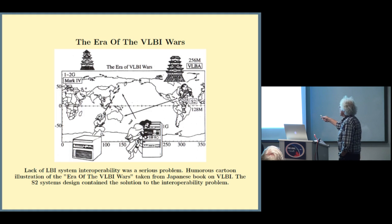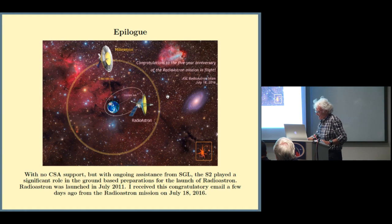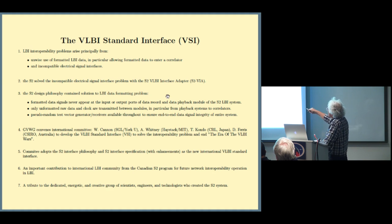This is the era of the VLBI wars. This is actually taken from a Japanese book on VLBI. The problem of interoperability produced all this difficulty. They call it the era of the VLBI wars. The S2, we won the war. This is a Canadian S2 guy with a big hammer. This is the K3 and K4 Japanese system. The VLBA and the Mark IV are these Haystack MIT systems. They're depicted as big fortified temples. The VLBI standard interface. In the end, they adopted the S2 philosophy and interface specifications for a new interface standard. The GBWG finally recognized that we had done the thing right. So they convened this committee: myself, Alan Whitney from Haystack, Tetsuro Kondo from CRL, and Dick Ferris from CSIRO to develop a new interface. This went on for about six months. In the end, it came down to adopting the S2 standard.